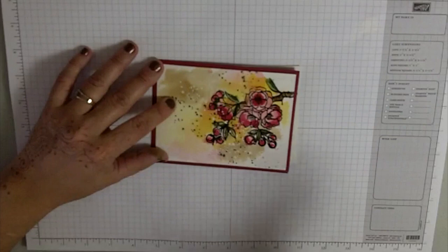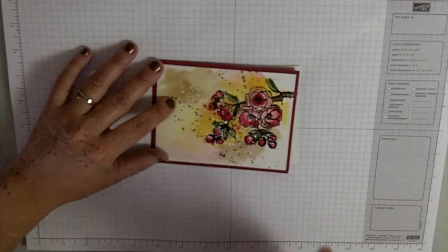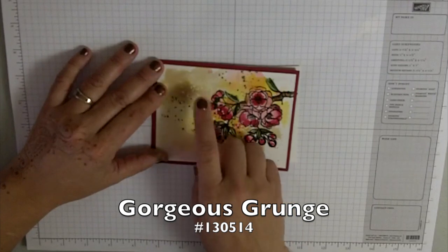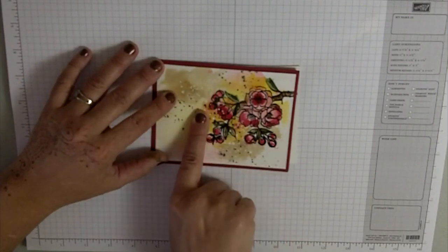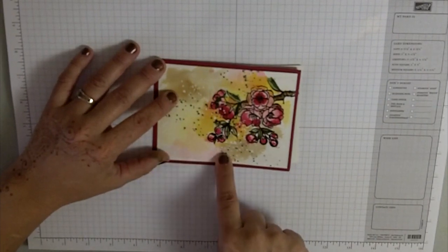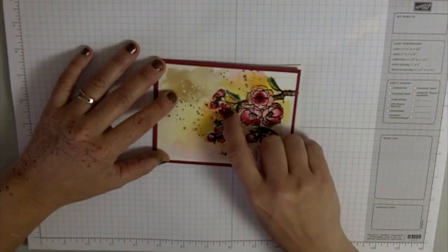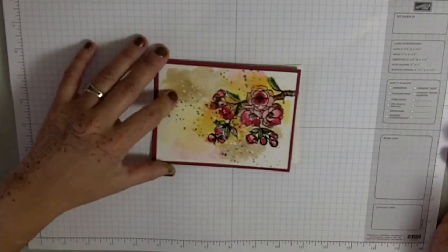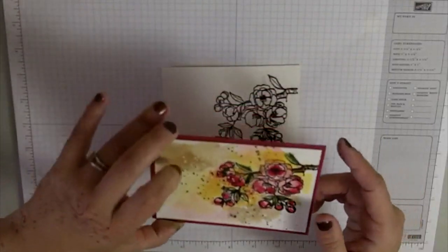I used the Gorgeous Grunge set and the speckles in it, and I embossed it in white. That creates a resist technique, so we've got a resist technique going on here. You can see the little speckles in the flowers. It just gives it a little bit different look.